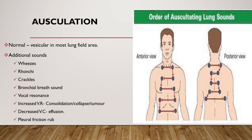Pleural friction rub occurs along the breathing pattern, and it is important to differentiate left anterior pleural friction rub from pericardial friction rub. When auscultating lung fields, just like percussion, we should go in a zigzag pattern, auscultating both anteriorly and posteriorly, listening for one full breathing cycle — both inspiration and expiration — at each point.